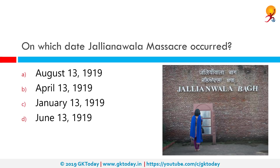On which date did the Jallianwala Bagh massacre occur? The correct answer is April 13, 1919. The Jallianwala Bagh massacre, also known as the Amritsar massacre, took place on 13th April 1919 when troops of the British Indian Army under the command of Colonel Reginald Dyer fired rifles into a crowd of Punjabis who had gathered at Jallianwala Bagh, Amritsar, Punjab, to peacefully protest.